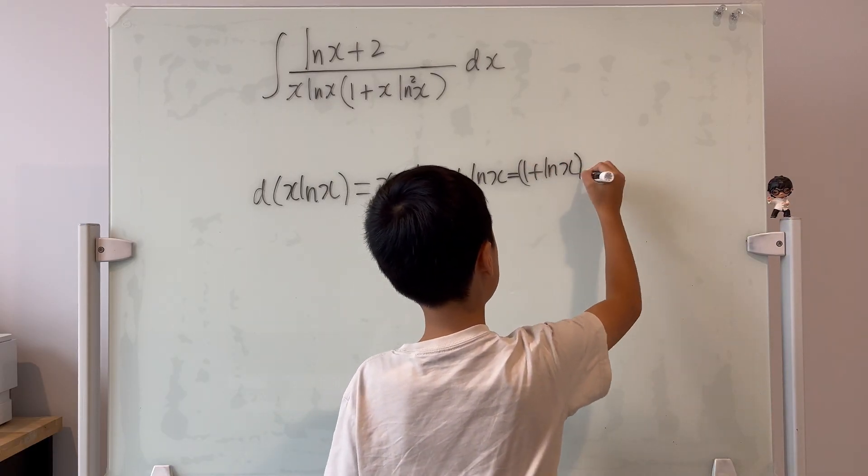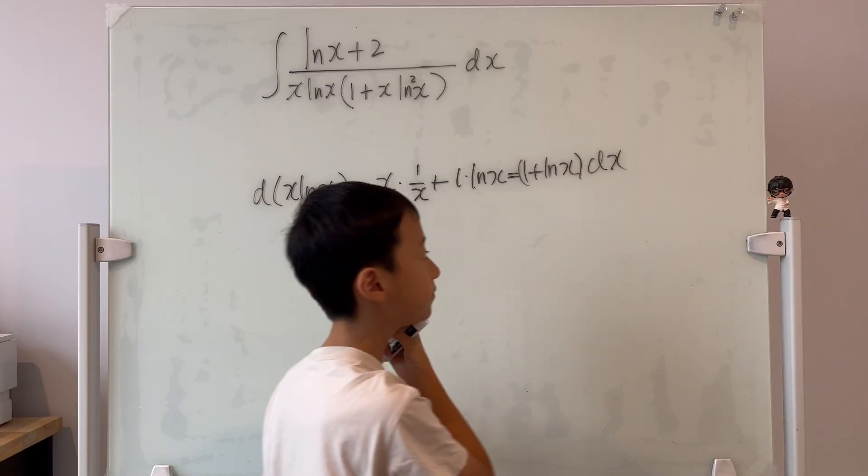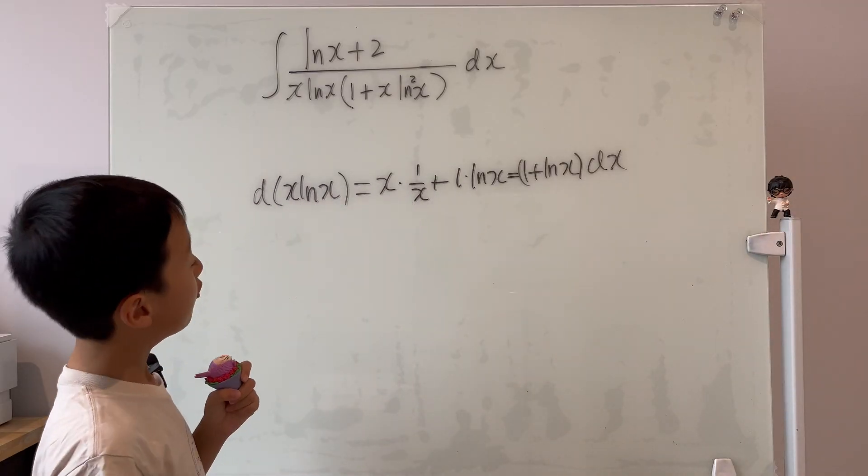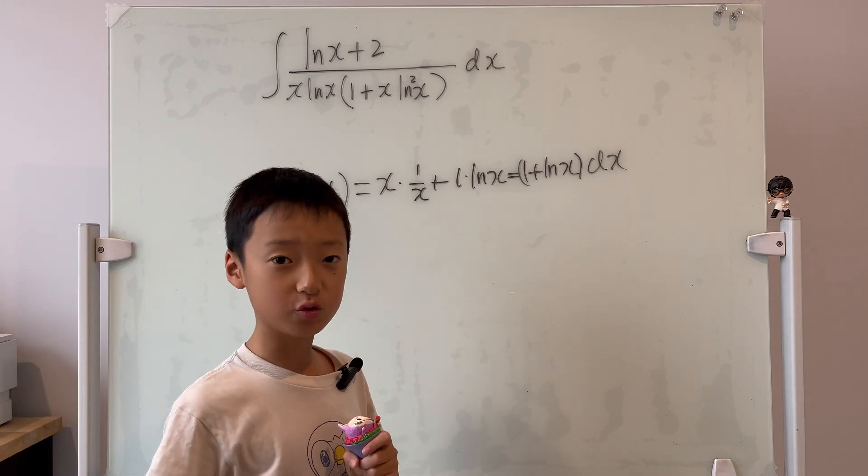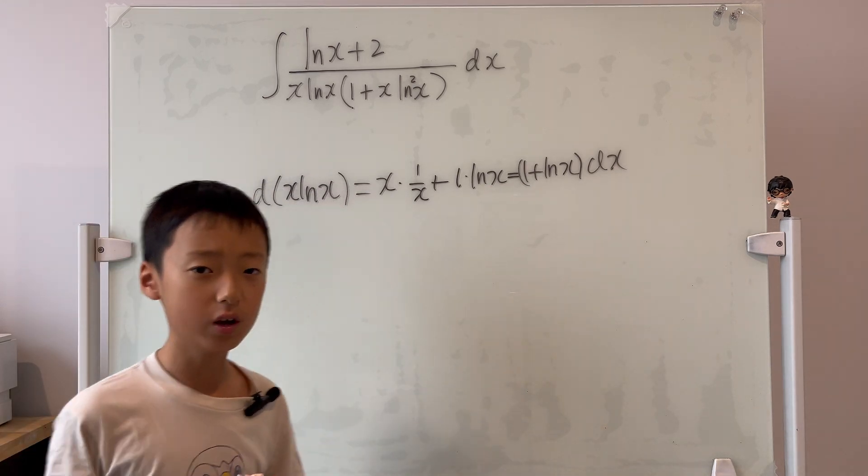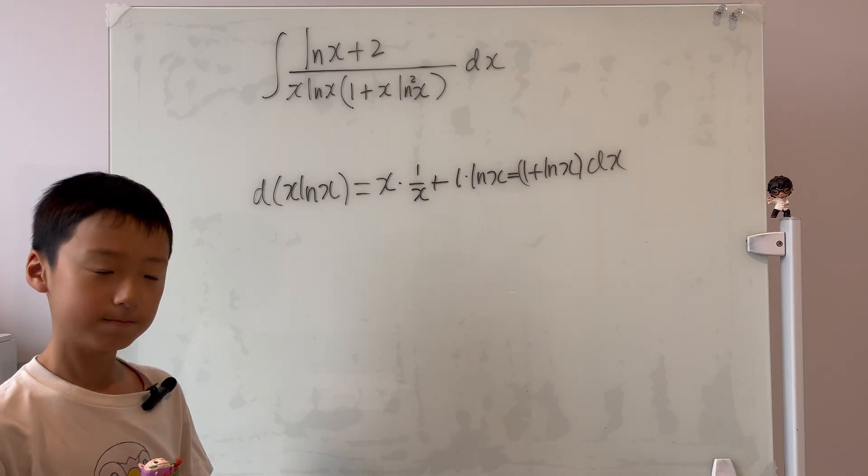And then, don't forget the dx. Well, look at the numerator. We have ln x plus 2. Look at our differential, we have ln x plus 1. That's bad, isn't it?